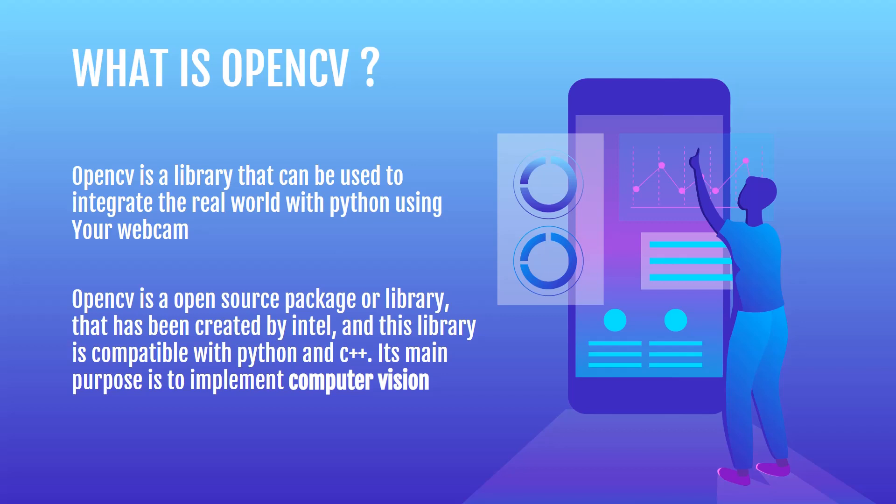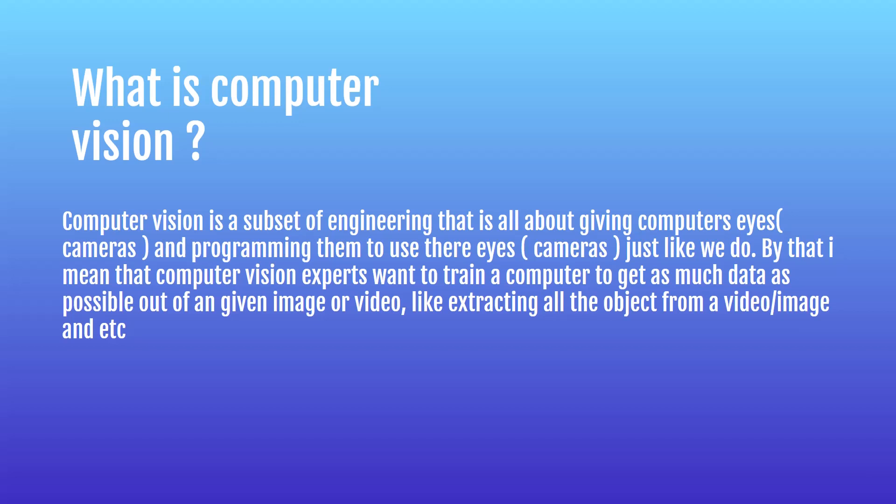So you might be wondering, what is computer vision? Computer vision is a subset of engineering that is all about giving computers eyes — or cameras — and programming them to use those cameras just like we do. Computer vision experts want to train a computer to get as much data as possible out of a given image or video, like extracting all the objects from a video or image. Think about how we use our eyes — we mainly use them to get data of the world around us and our surroundings, so we can tell our brain what's around us and what's happening.